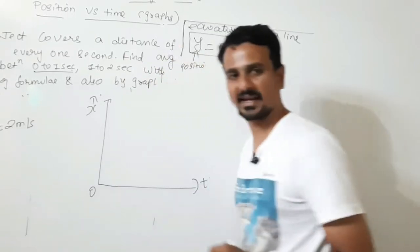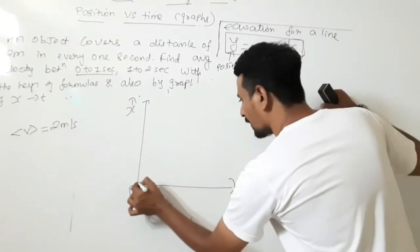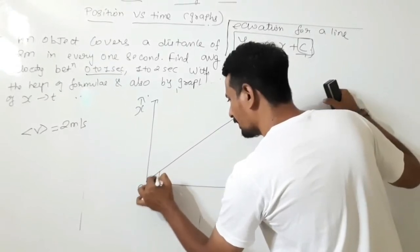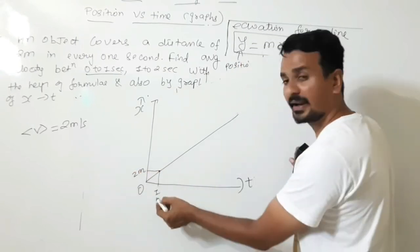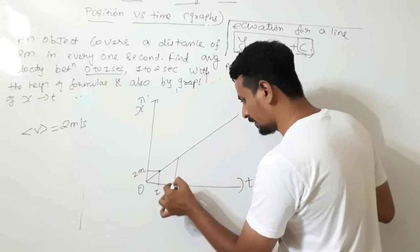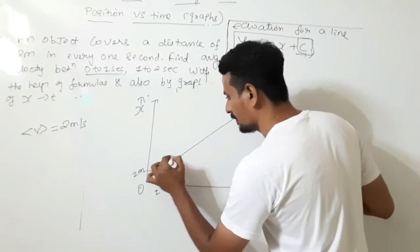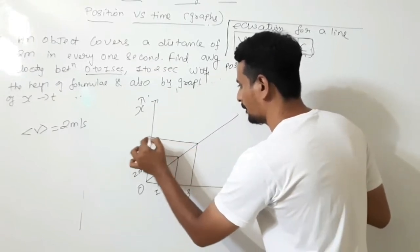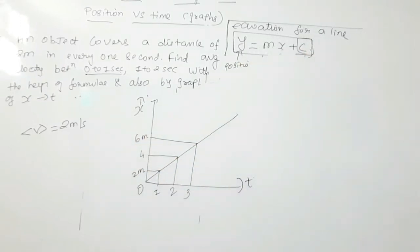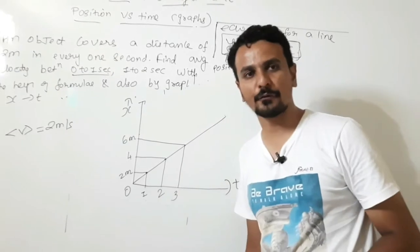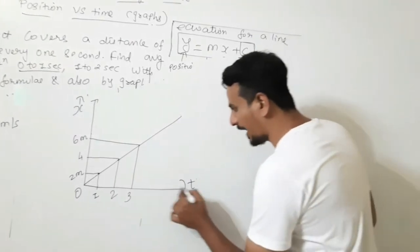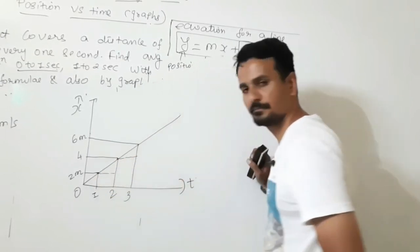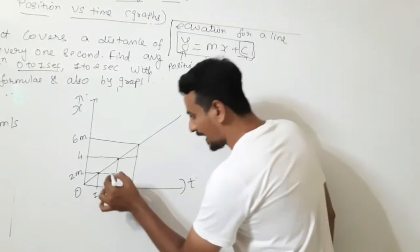We will find the slope of this graph. Average velocity calculated with the formula comes out to be 2 meters per second. Our graph shows the object traveling 2 meters every second — at 1 second: 2 meters, next second: 4 meters, next: 6 meters. Now we need to find the slope of this graph. If this is the x-axis, extend this line and mark the angle as θ.